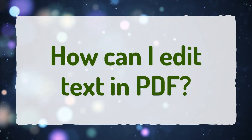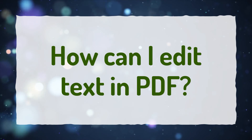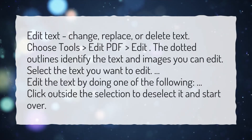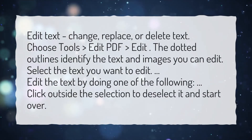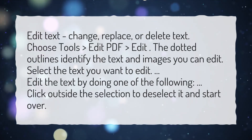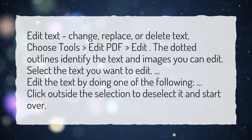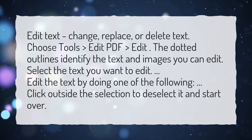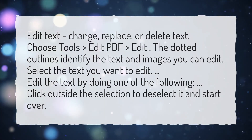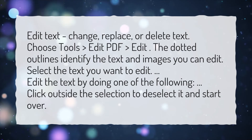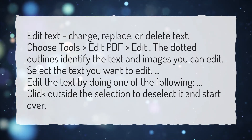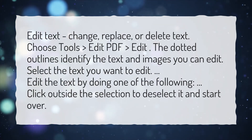How can I edit text in PDF? Edit text, change, replace, or delete text. Choose Tools > Edit PDF > Edit. The dotted outlines identify the text and images you can edit. Select the text you want to edit. Edit the text by doing one of the following. Click outside the selection to deselect it and start over.